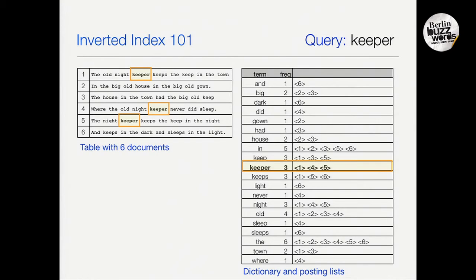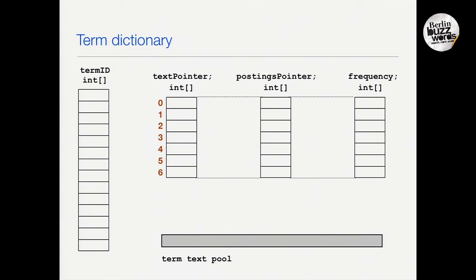We also store per-term metadata in this index — for example, term frequency, meaning the number of documents in which that term occurs. For the data structure storing terms, unlike Lucene — which uses a sorted structure to support fuzzy queries and wildcard queries — we use a hash table. Since we don't currently support wildcard or fuzzy queries, we don't need a sorted dictionary, so we use a more memory-efficient O(1) hash table.